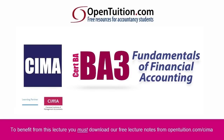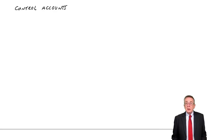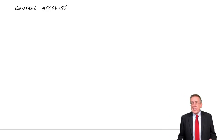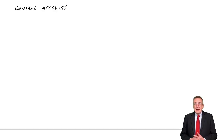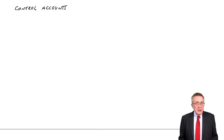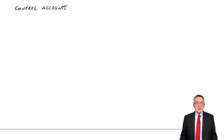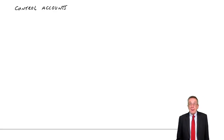This is a lecture from Open Tuition. To benefit from the lecture, you should download the free lecture notes from opentuition.com. This is the first of a few lectures on control accounts, which can be asked in really two different ways, as you'll see as we go through it. But before I show you the types of questions that can be asked, we need a little bit of revision of something we did earlier on books of prime entry, and then I can explain what control accounts actually are. If you haven't watched the earlier lectures on books of prime entry, do, because I'm not going to go through the entire lecture again — just a tiny bit of quick revision.